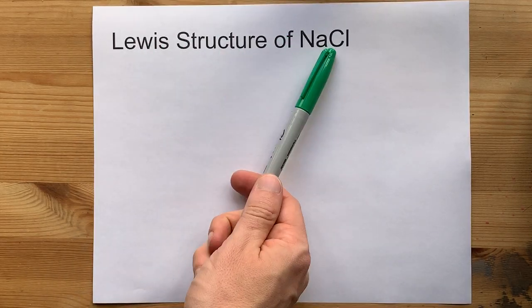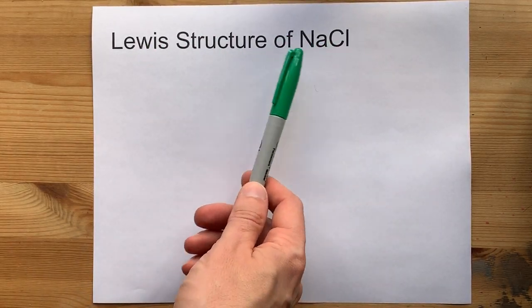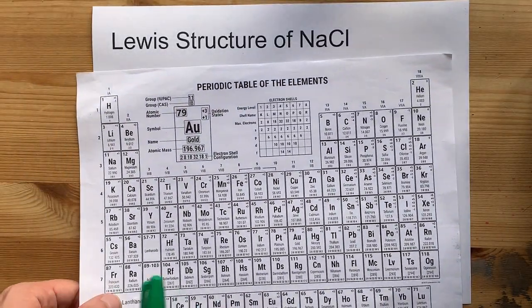Lewis structure of NaCl, by far one of the most common ionic Lewis structures that get asked.